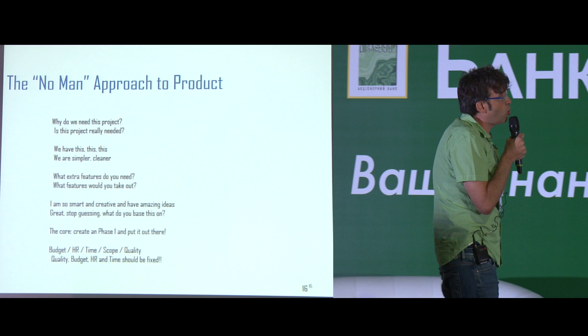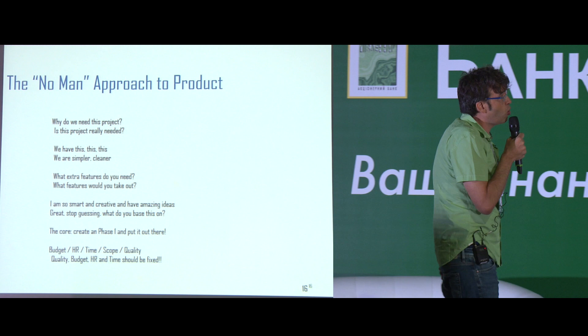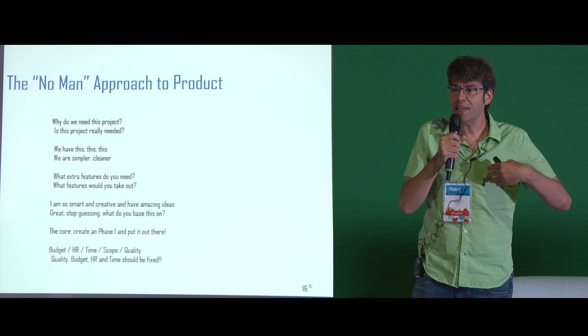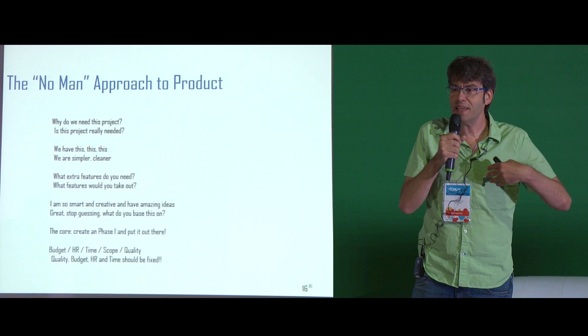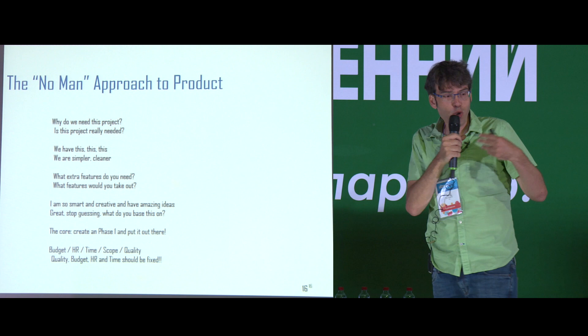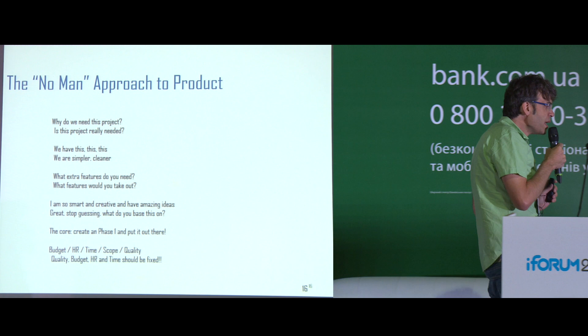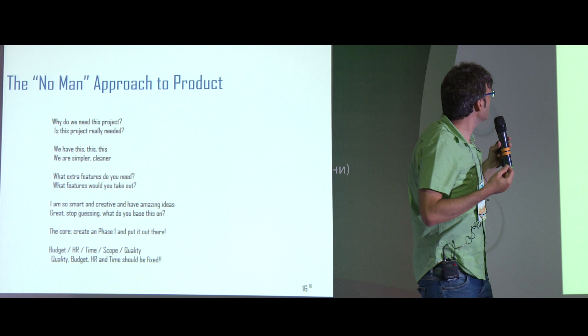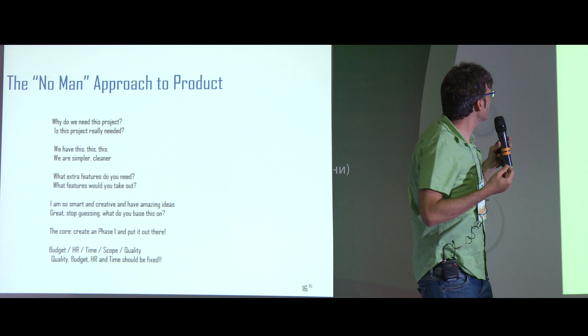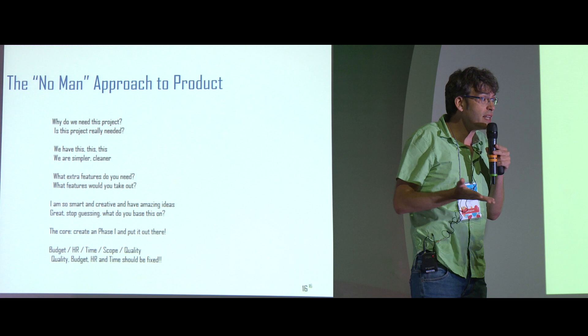I'd like to suggest what I call the no-man approach to product management to confront this problem. You know what a yes-man does — they say yes to everything. A no-man says no. Instead of asking 'why do we need this project?' let's ask 'do we need this project at all? Is this project needed?' Maybe it's not a needed project, and then we can save time and do important things.